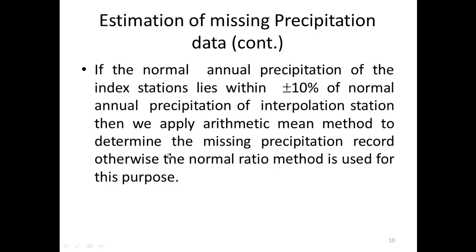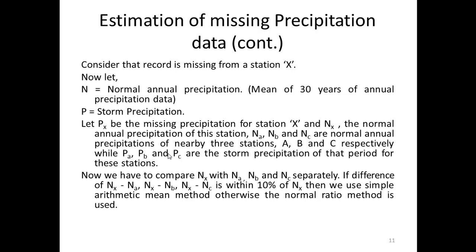If the normal annual precipitation of the index stations lies within plus or minus 10% of the normal annual precipitation of the interpolation station, then we apply the arithmetic mean method to determine the missing precipitation record; otherwise, the normal ratio method is used. Consider that a record is missing from station X. Let N denote the normal annual mean of 30 years for annual precipitation. Px is the missing storm precipitation for station X, and Nx is the normal annual precipitation of station X. NA, NB, and NC are the normal annual precipitations of the nearby three stations A, B, and C respectively, while PA, PB, and PC are the storm precipitations for those stations.